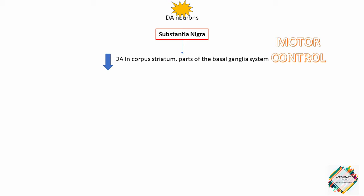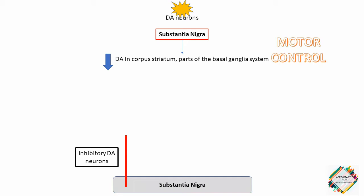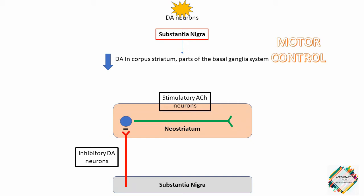Talking about the different parts affected in Parkinson's disease, the substantia nigra is a part of the extrapyramidal system which is the source of the dopaminergic neurons that terminate in the neostriatum. Each dopaminergic neuron makes thousands of synaptic contacts within the neostriatum and therefore modulates the activity of a large number of cells.